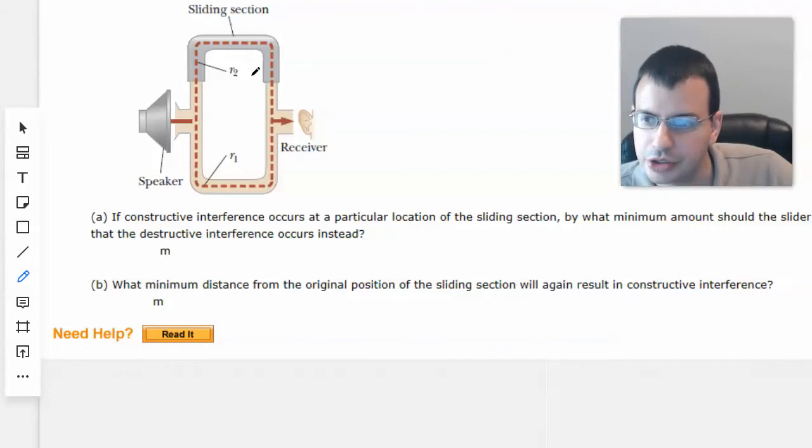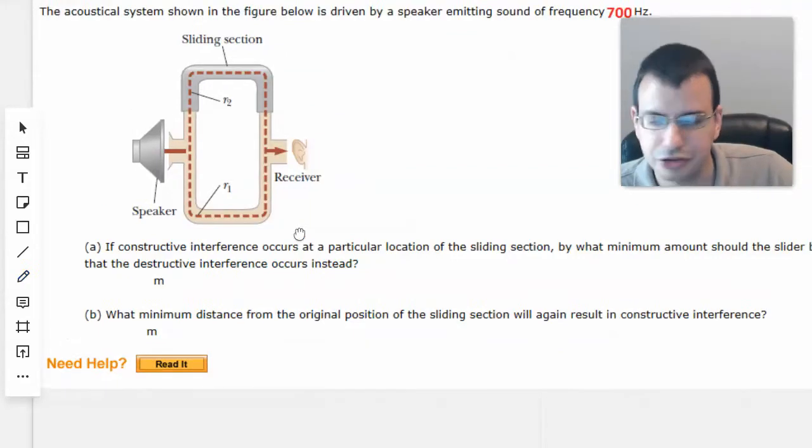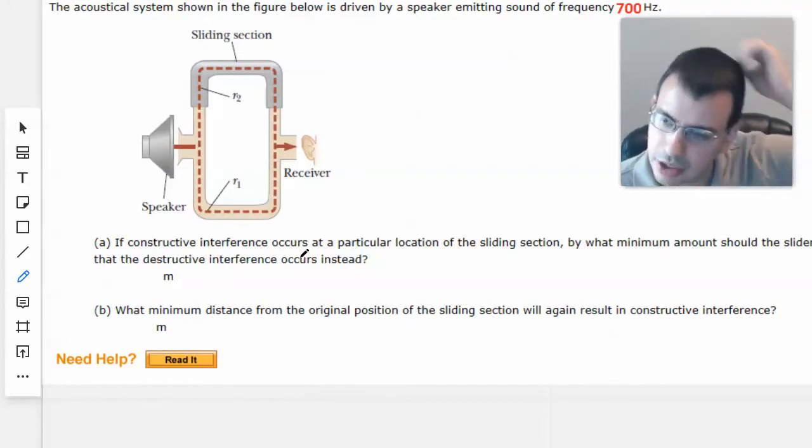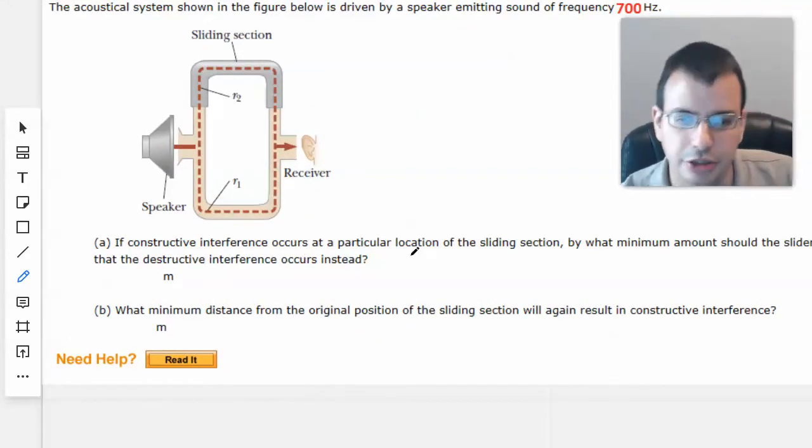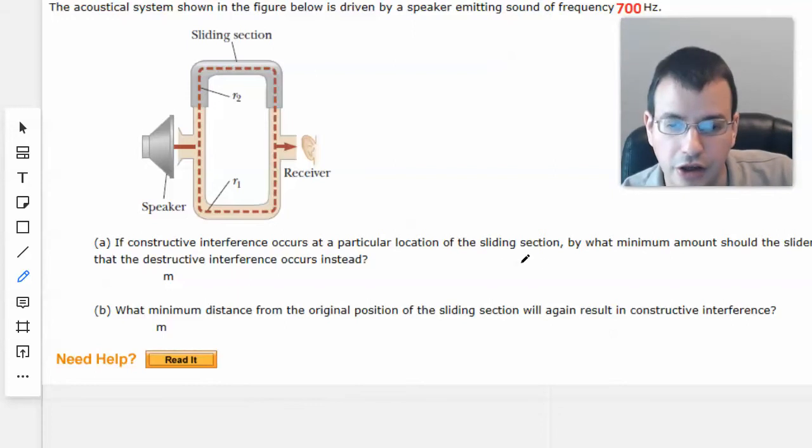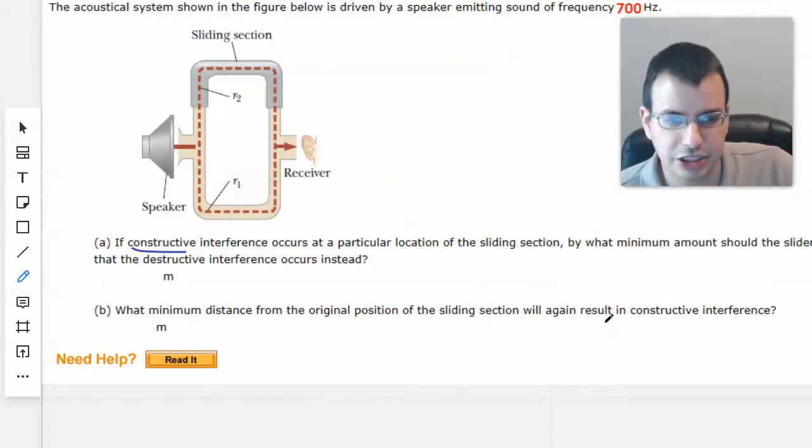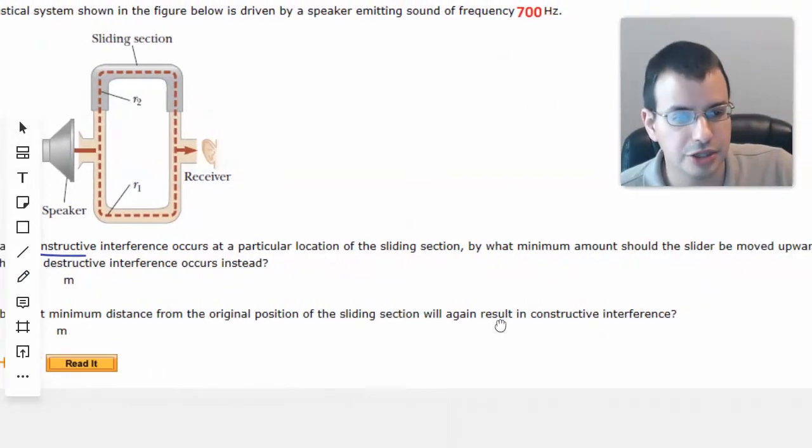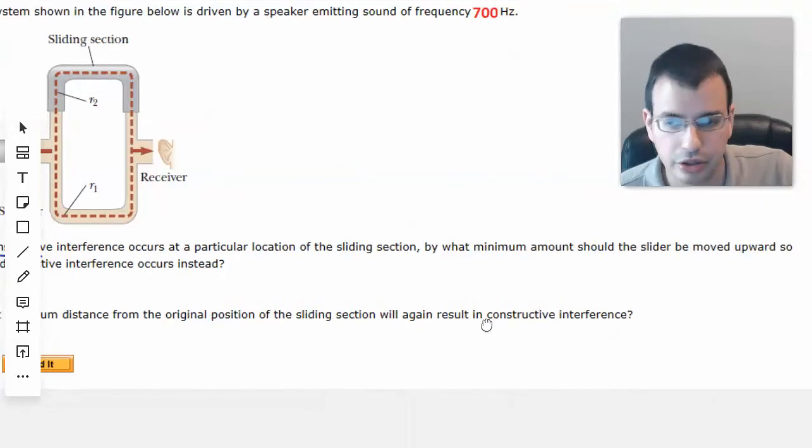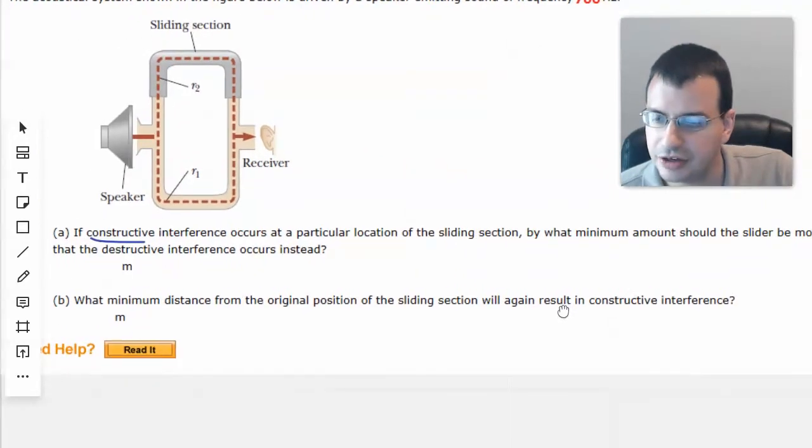Okay, it goes up and goes down. Kind of like a trombone type thing. If constructive interference occurs at a particular location of the sliding section, by what minimum amount should the slider be moved upward so that destructive interference occurs instead?